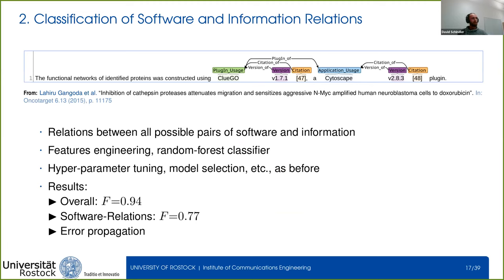The second step of our pipeline is to classify software and information relations. We consider all possible connections between pairs of software and information and classify if there is a relation and, if so, which type it has. We did this using feature engineering and a random forest classifier, again chosen based on hyperparameter tuning. This results in an overall F-Score of 0.94, though extraction of software relations performs slightly worse with an F-Score of 0.77.